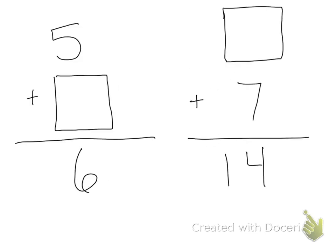We can also write these problems this way. We have five plus something equals six. Since five and six are next to each other on my counting line, I know that I have to add one. What about the next one? We have something plus seven equals fourteen. With my doubles facts I learned today that seven plus seven equals fourteen, so seven is going to be my missing number.